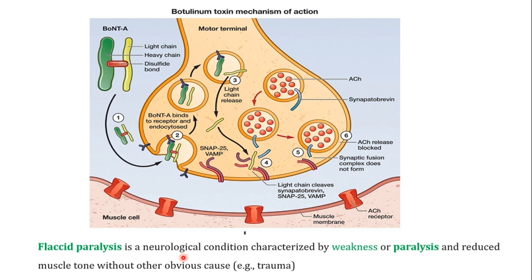When the botulinum toxin enters the neuron, it blocks the release of acetylcholine. The botulinum toxin has two chains: a light chain and a heavy chain, connected by a disulfide bond. The toxin uses its heavy chain to attach to the neuron, which leads to endocytosis of the whole toxin. You can see the receptor for botulinum toxin here — the heavy chain attaches to this receptor and the entire toxin undergoes endocytosis.